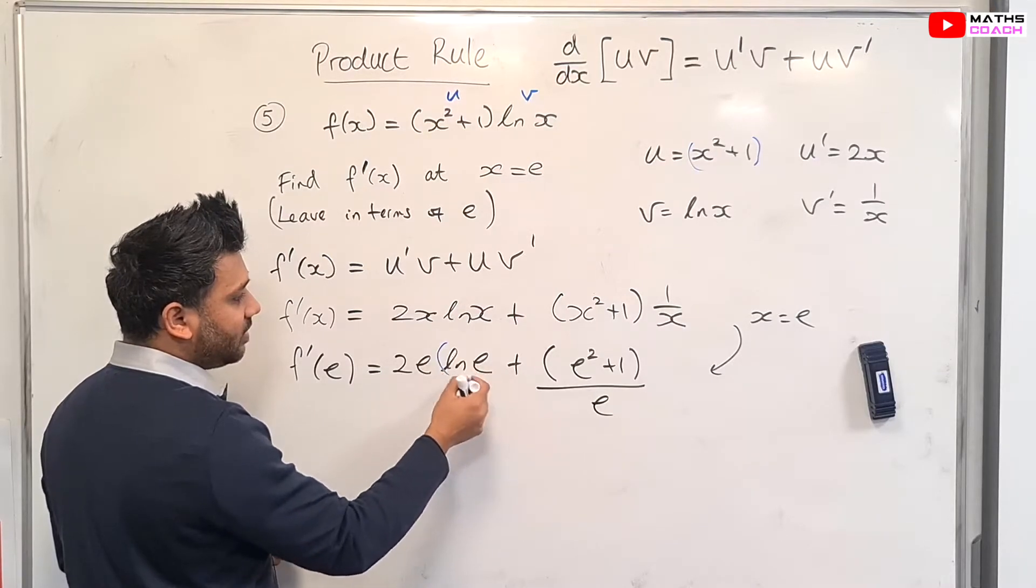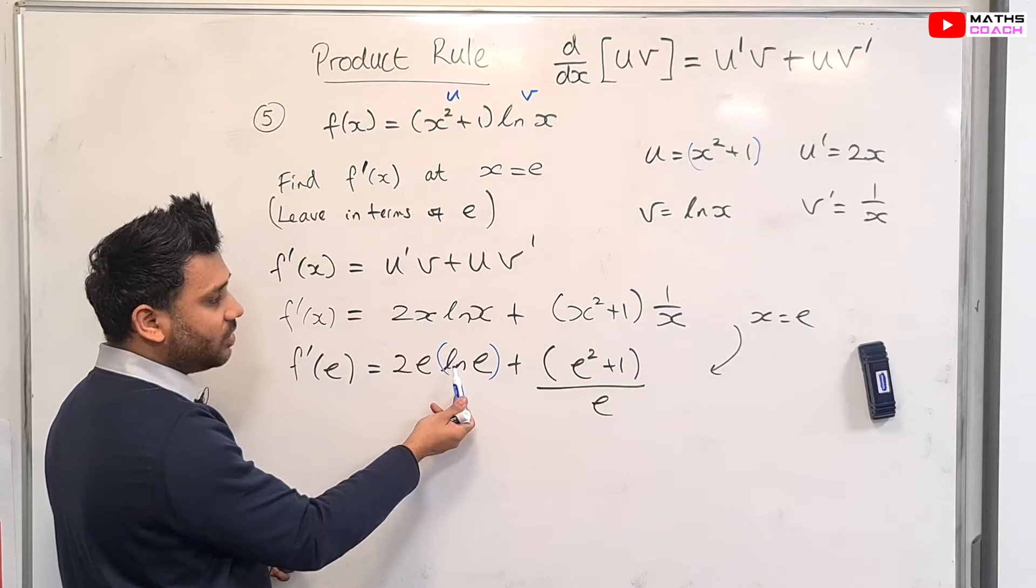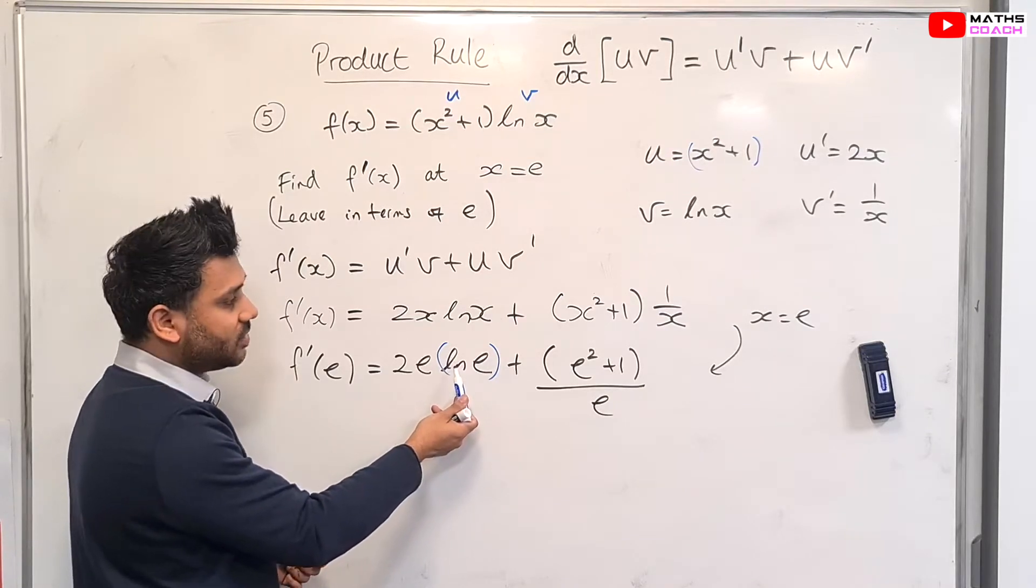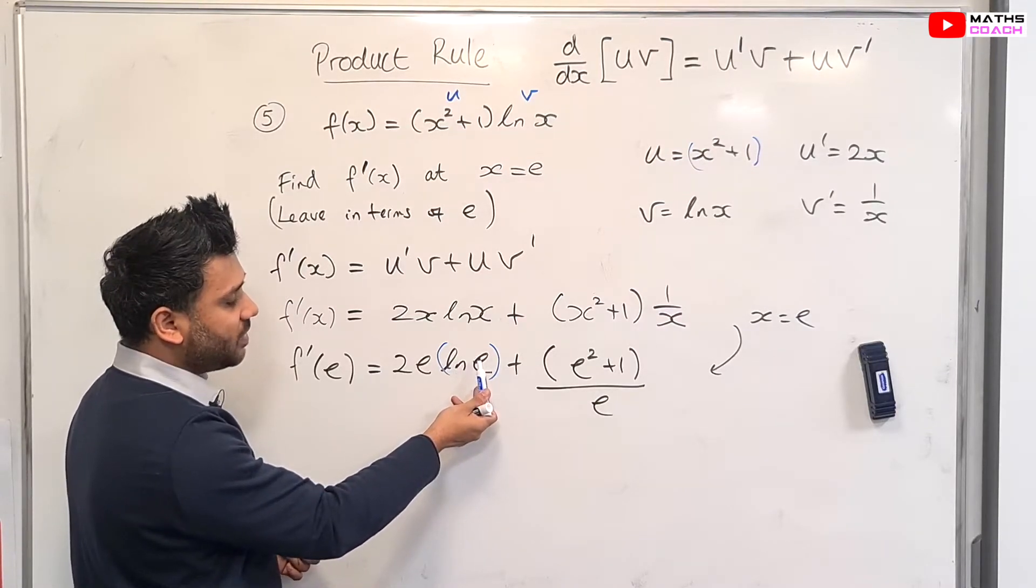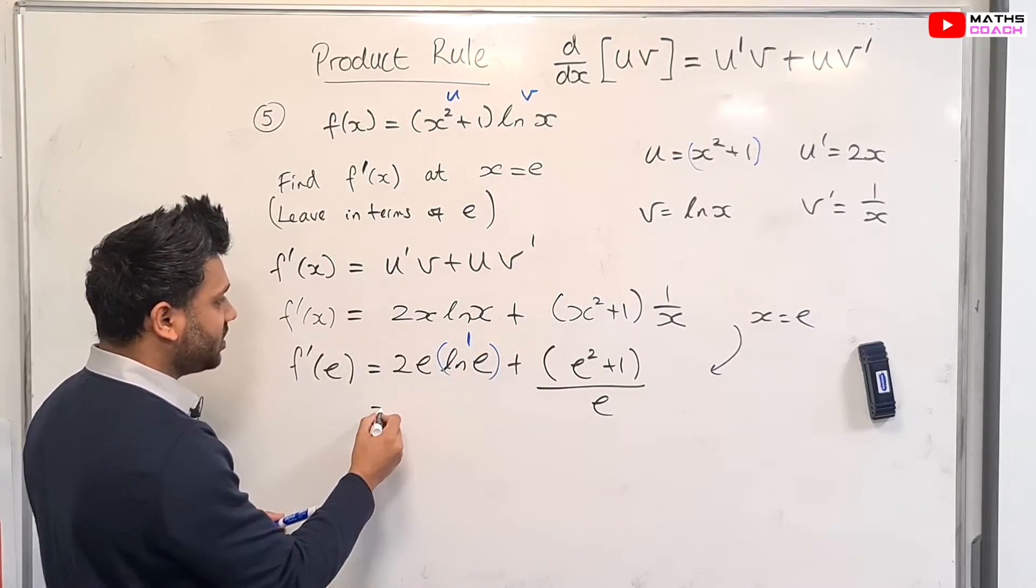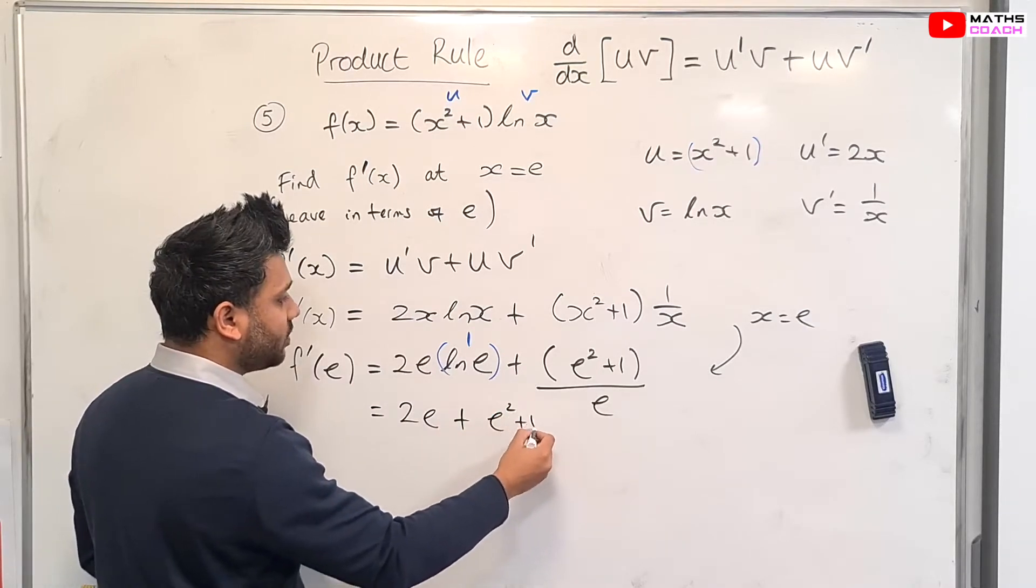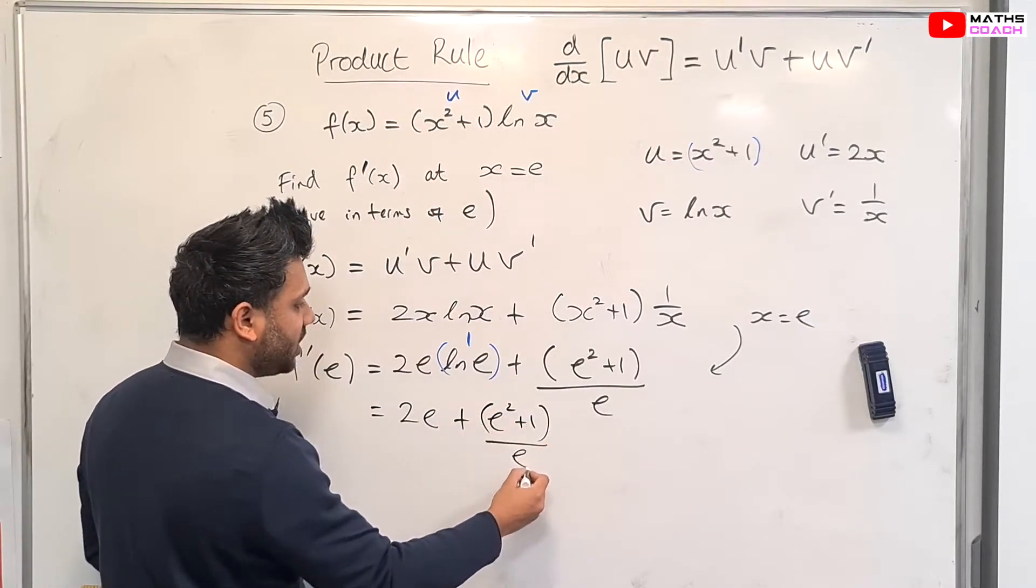ln and e cancel out because ln is defined as the log to base e. So if you log to base e of the same base, they cancel out, and I just leave you with the number 1. So this just becomes 2e plus (e squared plus 1) over e.